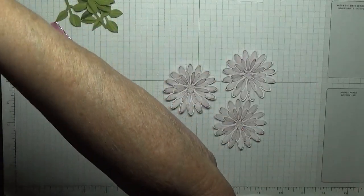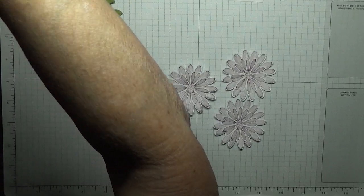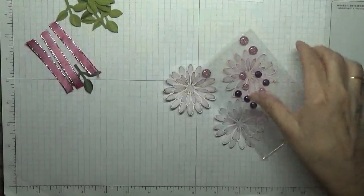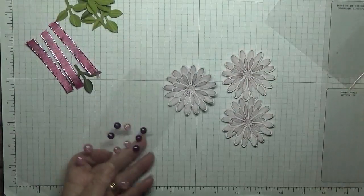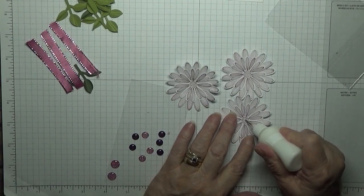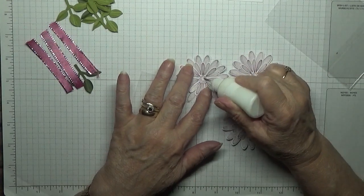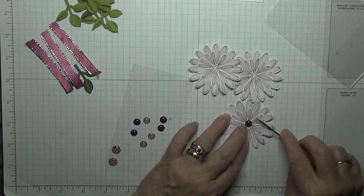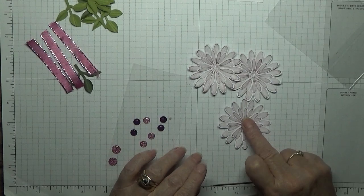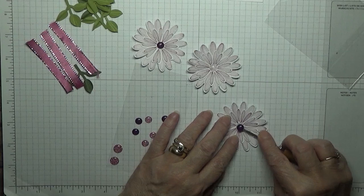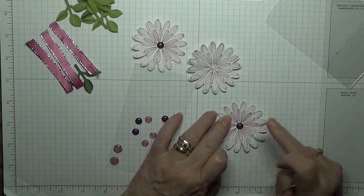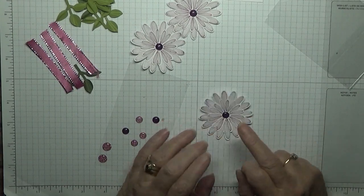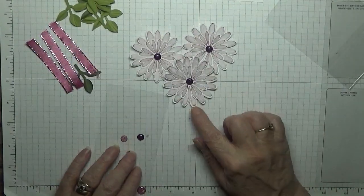Then we need to do, I have got some faceted gems. I don't know where I've got them from. They're nice dark gems which I thought looked nice in the flowers. And just place them in the middle of each flower. There we are, that's our little daisies done.